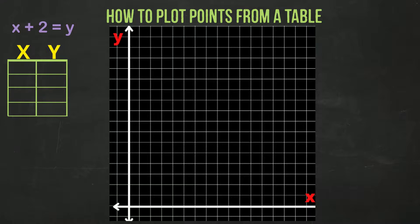Let's look at the first x value, which is 2. If we were to plug 2 into our equation of x plus 2 equals y, we can see that 2 plus 2 equals 4. So our y value in the table is 4.